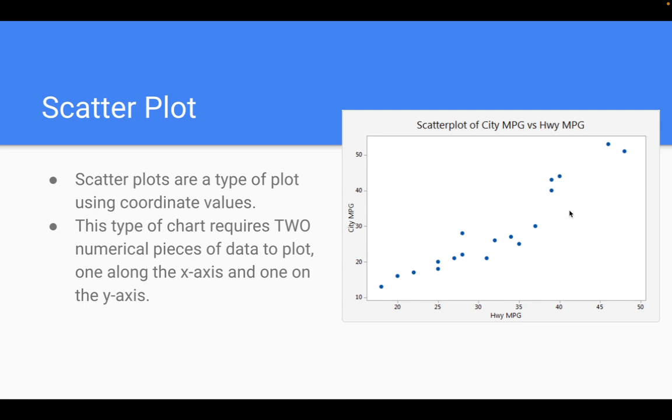Alright, so the next type of display is scatter plot. These are used to plot on a coordinate system. So these require two pieces of numerical data. You have to have your x-axis value and your y-axis value.